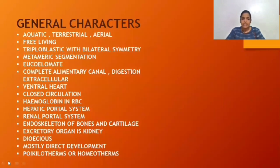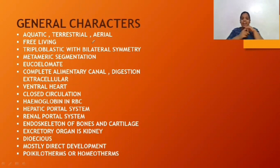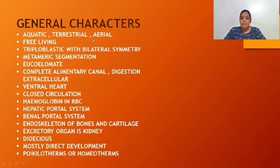Next, we have the general characters of the Chordate members. The members can be aquatic, terrestrial, or aerial — found in water, on land, or in air. Birds are aerial, and bats — which are mammals — are also aerial members. They are usually free-living type and have bilateral symmetry with three germ layers: ectoderm, mesoderm, and endoderm. So they are triploblastic with bilateral symmetry.